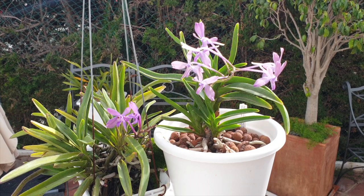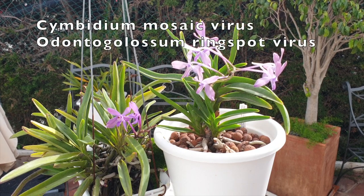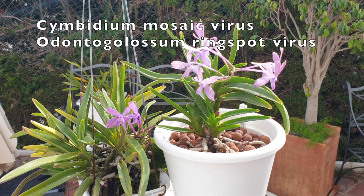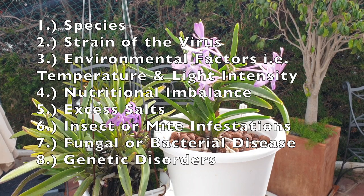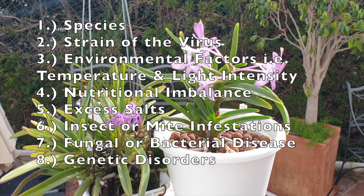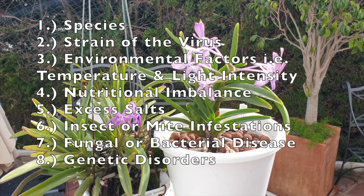Seeing as there are more than 25 viruses that have been reported to infect orchids, the two most common being cymbidium mosaic virus and odontoglossum ring spot virus, the symptoms caused by a particular virus will vary depending on the orchid species, the strain of the virus, and environmental factors such as temperature and light intensity. Orchids infected with a virus may show no visible symptoms at all.